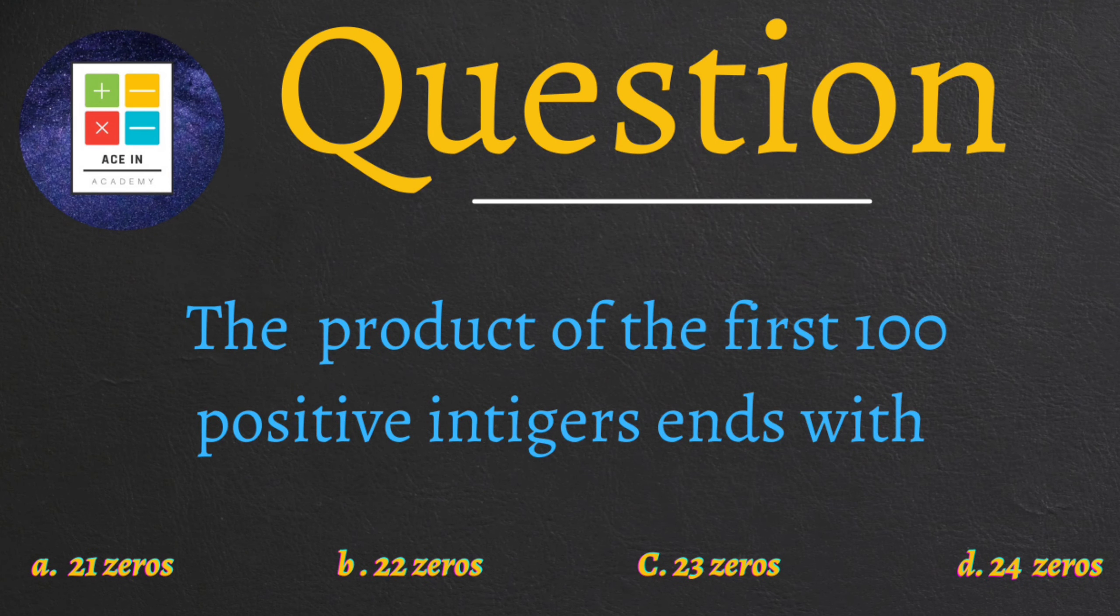The product of the first hundred positive integers end with - we are provided with four options: A) 21 zeros, B) 22 zeros, C) 23 zeros, and D) 24 zeros.